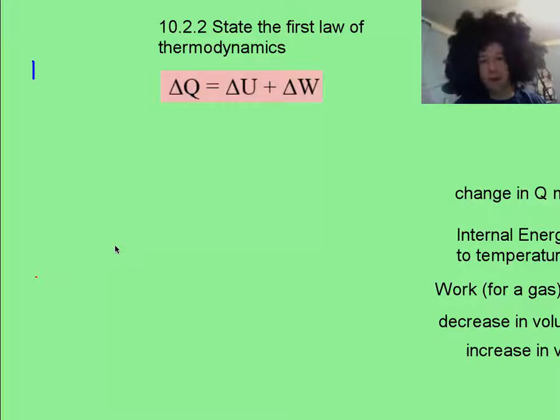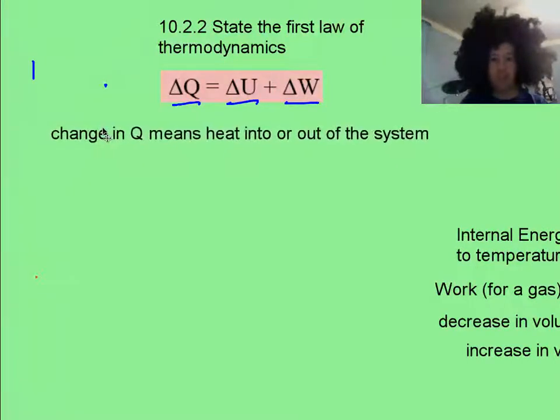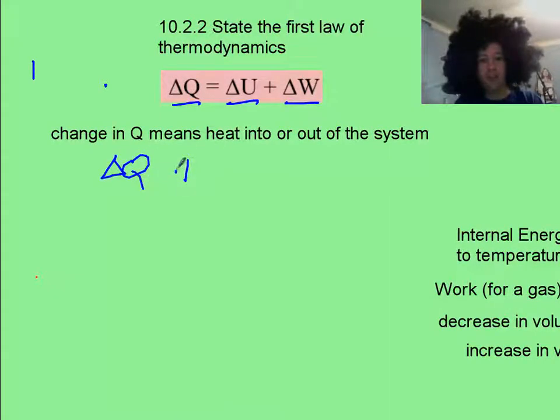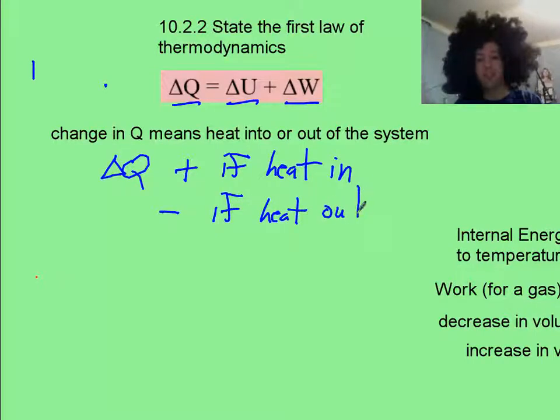Here is the first law of thermodynamics in all its equational glory. You really just need to know what each of these terms, delta Q, delta U, and delta W, mean. And then working with it is pretty easy. Now, delta Q, that's the change in heat. And delta Q is positive if heat goes in, and then it's negative if you take heat out. Somehow you're cooling the system with ice.